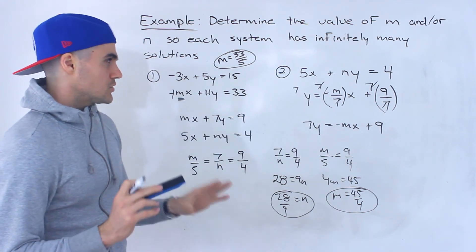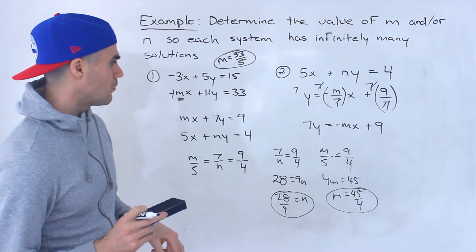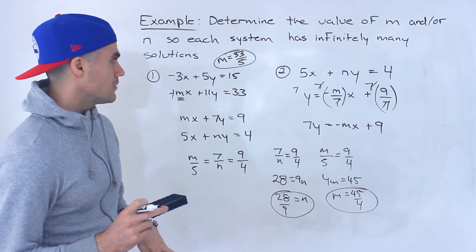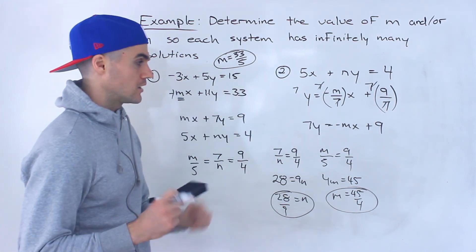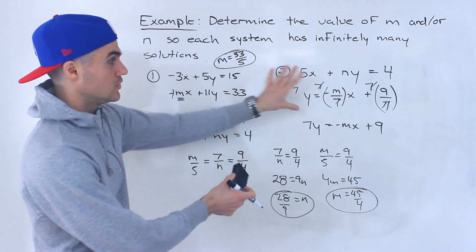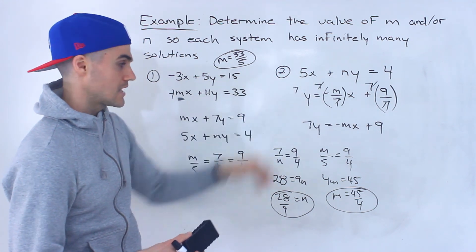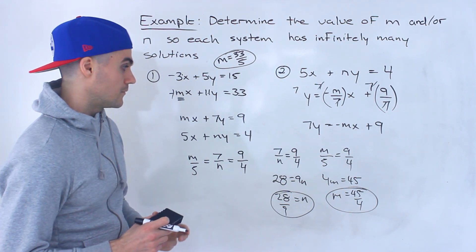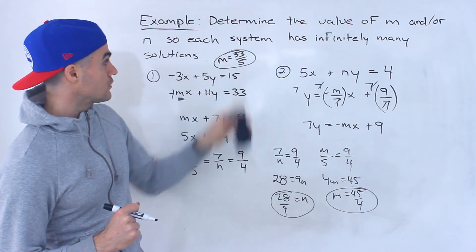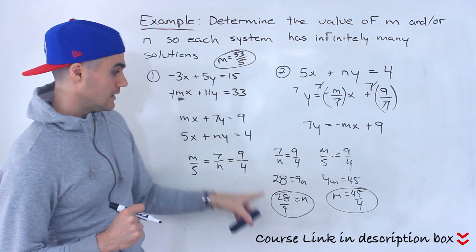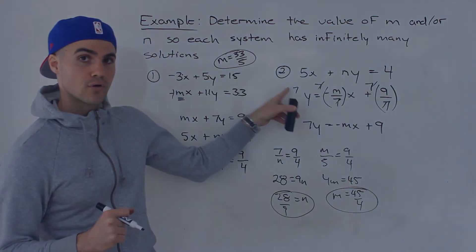Sometimes it takes experience to see which approach will be easier. For most cases, it's best to put equations in standard form and work with the ratios — the algebra tends to be less involved. You can always verify by plugging your answer in and converting both lines to y equals mx plus b format to confirm they're the same. So: m equals 33 over 5 for the first system, and n equals 28 over 9 with m equals 45 over 4 for the second system.